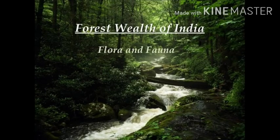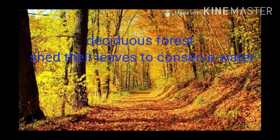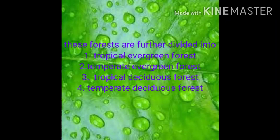The tundra vegetation of cold polar regions comprises mosses and lichens. Forests are broadly classified as evergreen and deciduous depending on when they shed their leaves. Evergreen forests do not shed their leaves simultaneously in any season. Deciduous forests shed their leaves in summer to conserve moisture through transpiration. These forests are further classified as tropical or temperate based on their location and different latitudes.